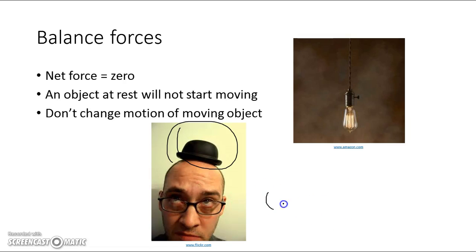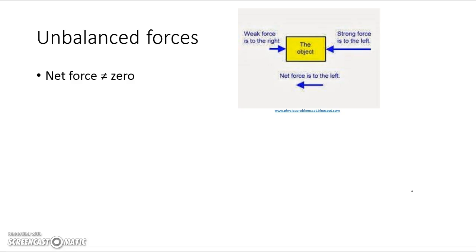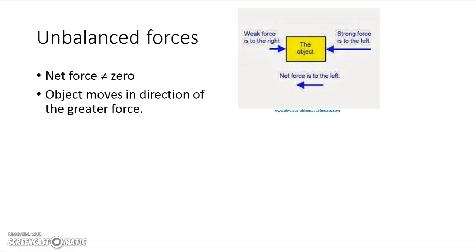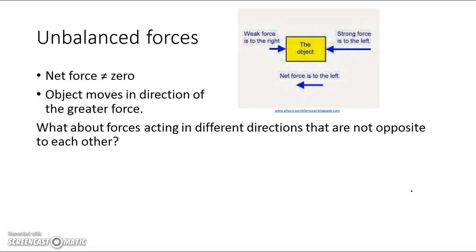Balanced forces also don't change the motion of an already-moving object — like a rolling bowling ball that keeps going, similar to inertia. With unbalanced forces, the net force is not equal to zero, so the object moves in the direction of the greater force. If an elephant pushes a box from one side and a mouse pushes from the other, the box goes in the direction the elephant pushes because it produces more force.